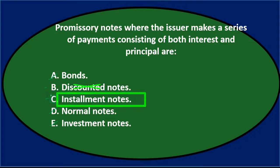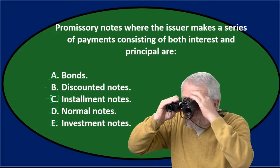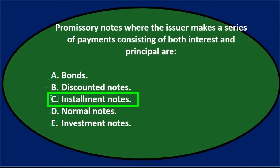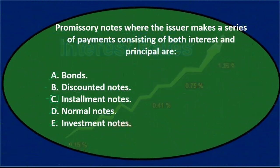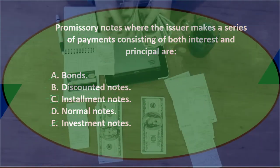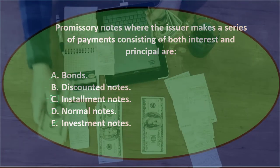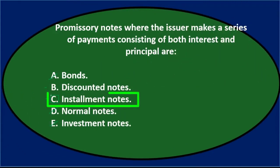The answer is c, installment notes. This is the type of note we're most familiar with. You can think of it as making installment payments — when we finance a car or a mortgage, we're typically paying back both interest and principal. The goal is to standardize the payment, although the amount allocated between interest and principal will vary with each payment.